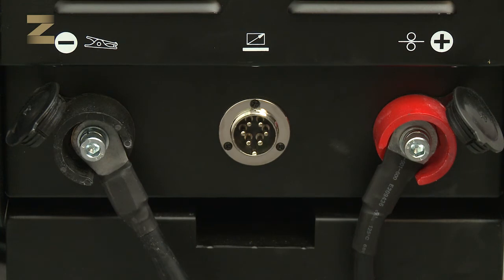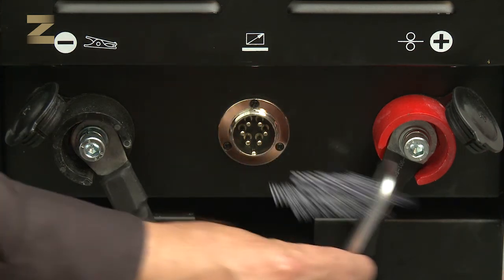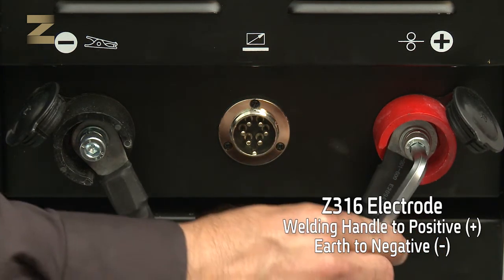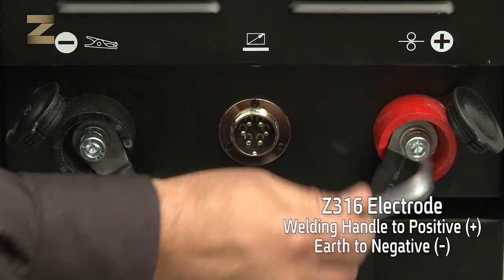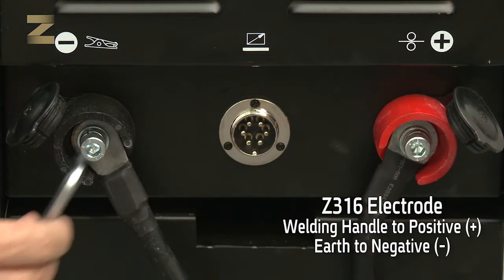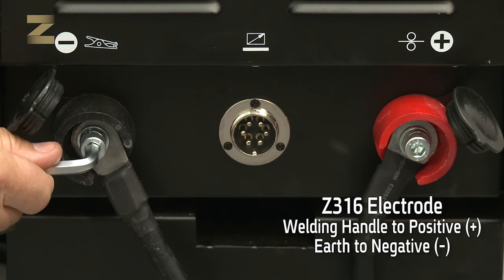Please note, each electrode has recommendations on the packaging labels for the connection of the welding handle to the positive or negative connector, as can be seen for example for the Zika 316 electrode, where the welding handle is connected to the positive connector, and the earth connection handle is connected to the negative connector.